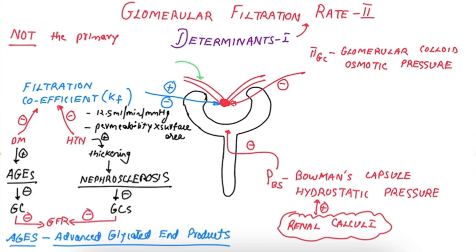The arterial colloid osmotic pressure is around 28 mmHg and it directly affects the glomerular colloid osmotic pressure. So if the arterial colloid osmotic pressure increases, the glomerular colloid osmotic pressure will increase. At the efferent arteriole it is 28 mmHg.